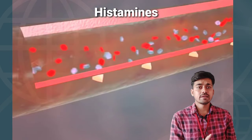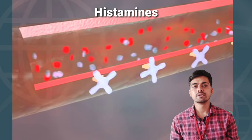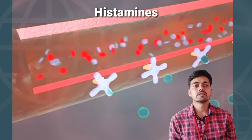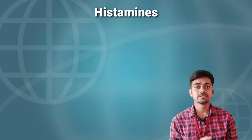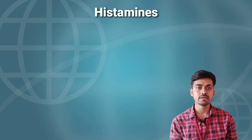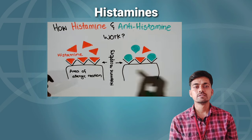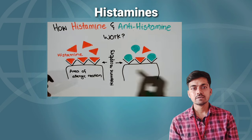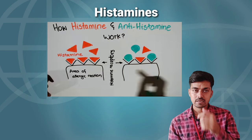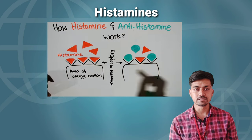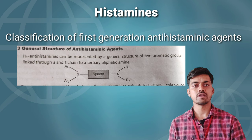Antihistamine drugs compete with histamines for their receptors. They decrease the histaminergic effect — inflammation or allergic reactions — caused by histamine. The mechanism of antihistamine drugs is to decrease the histamine effect by competing with histamine at the receptor level.